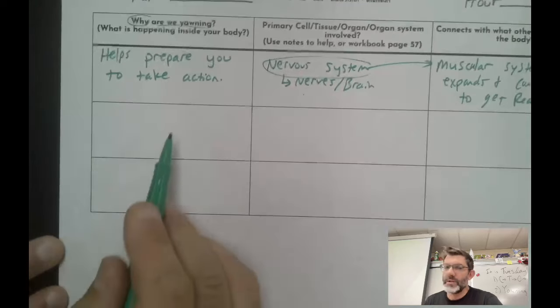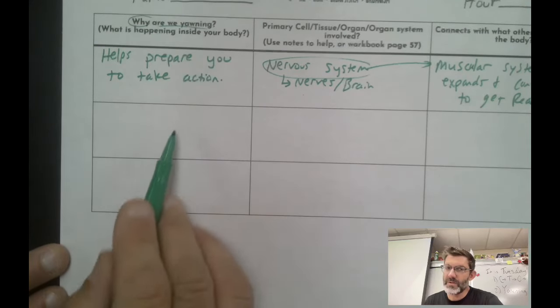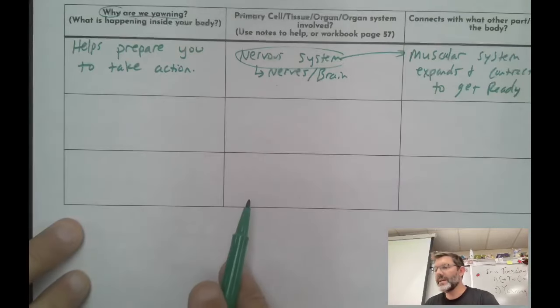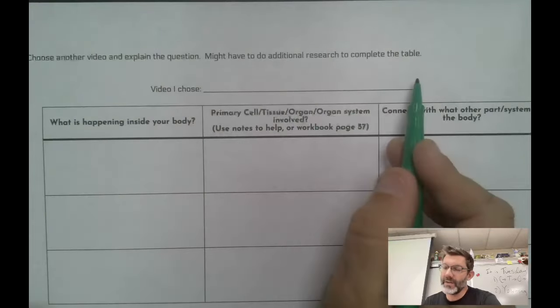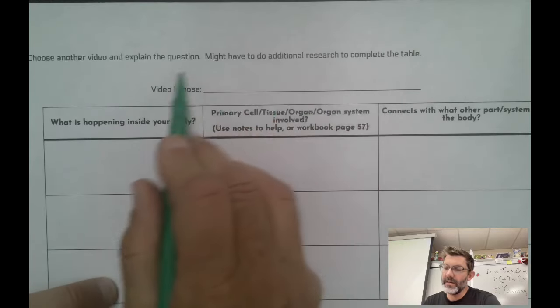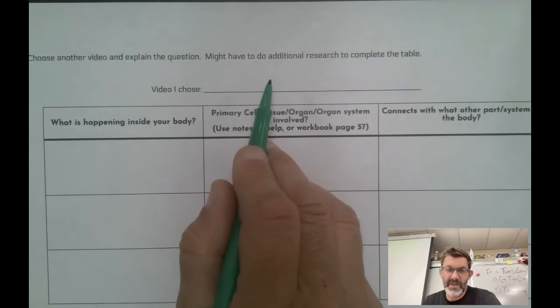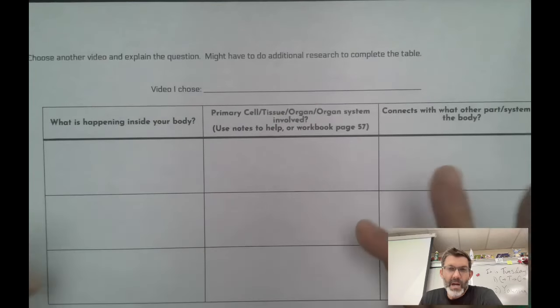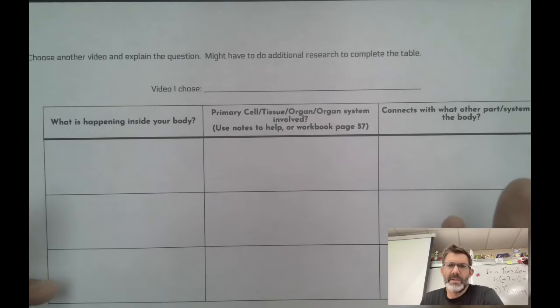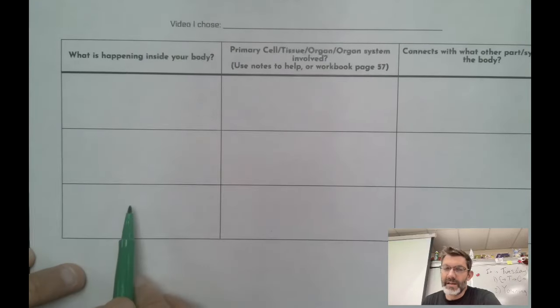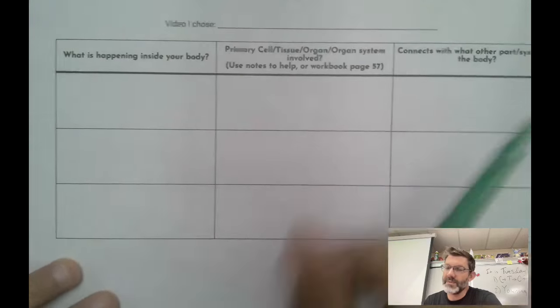You're going to do two more based upon the video you just watched. Once you have this organizer done then you're going to flip it over to the other side and I have a Google Doc on Google Classroom that has other types of videos you can choose from. Other just sort of things that we do and why do we do it? Kind of like yawning, why do we do it? So you're going to choose a video and you're going to fill out again three examples and go through this.